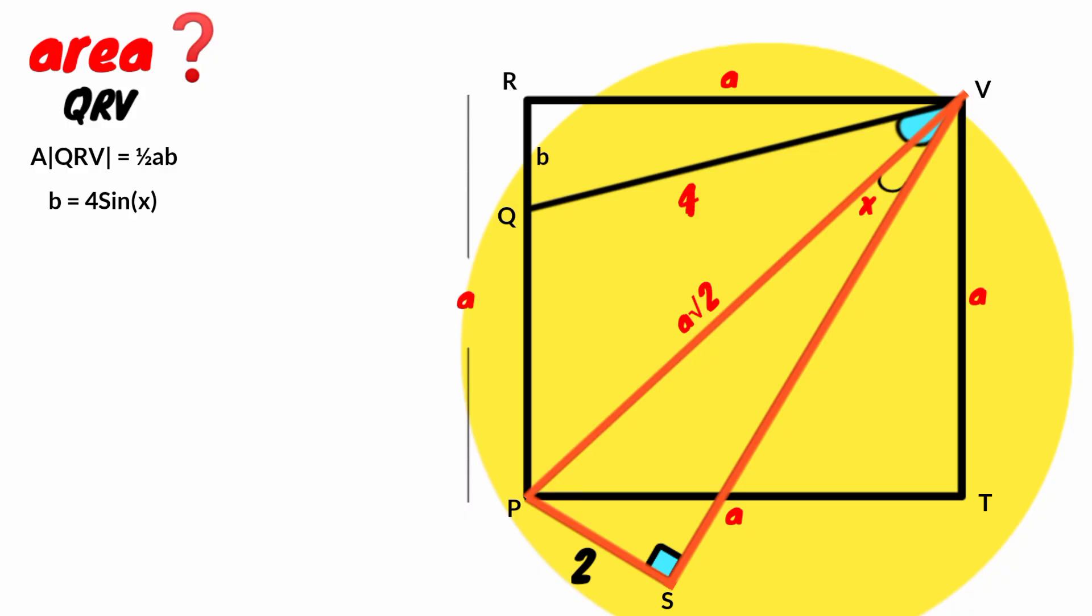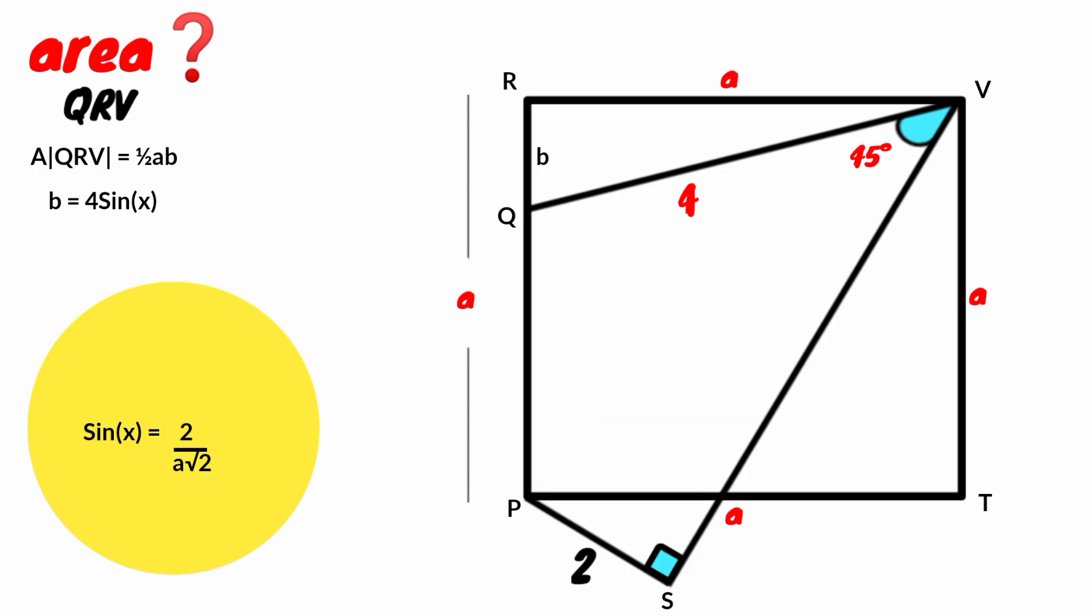We look at this triangle. It is a right angle triangle. We can also use SOHCAHTOA on it. Taking this angle as theta, this is the opposite and this is the hypotenuse. We know sin theta equal to opposite over hypotenuse. Theta is X, opposite is 2 and hypotenuse is A root 2. So sin X equal to 2 over A root 2.